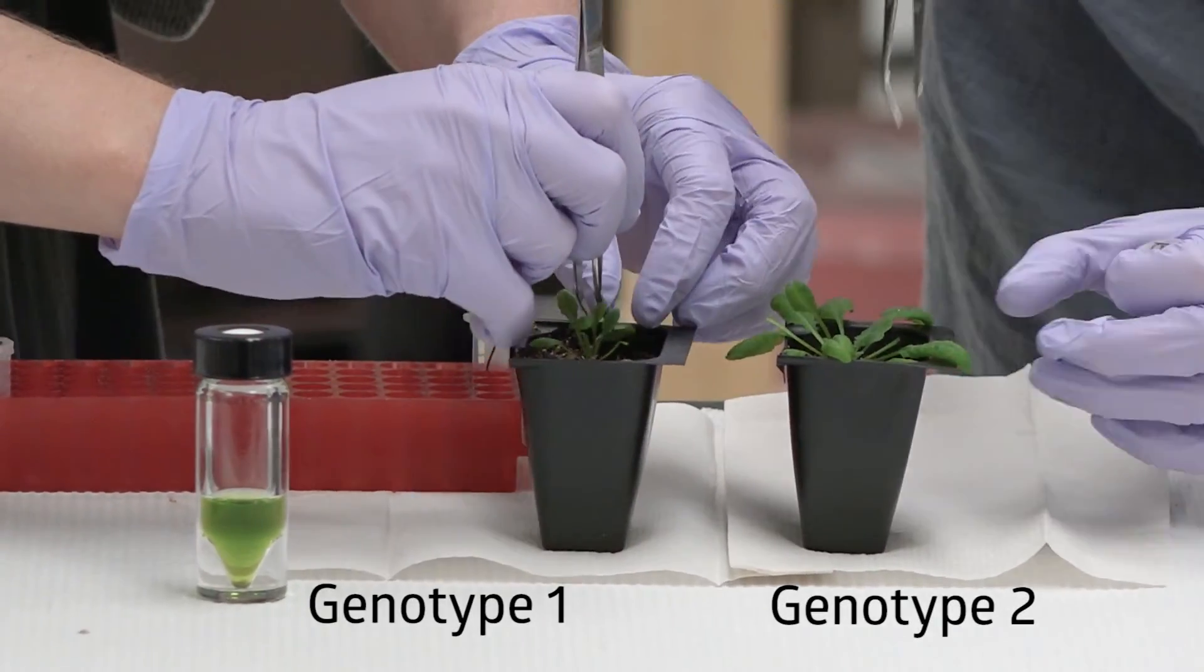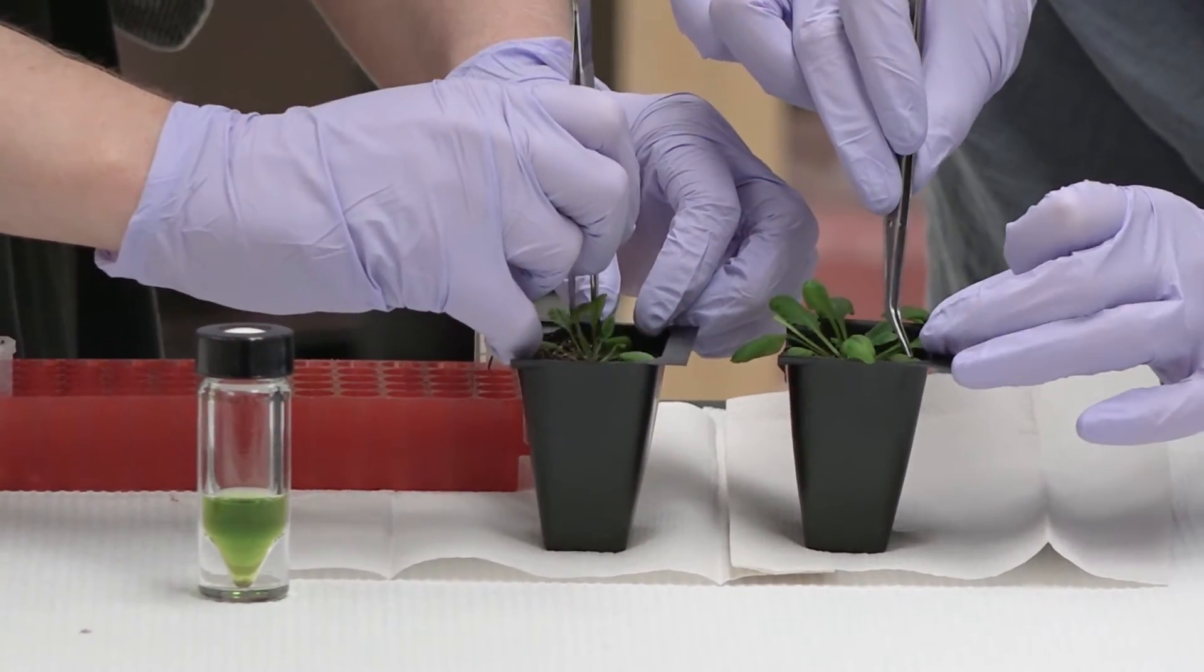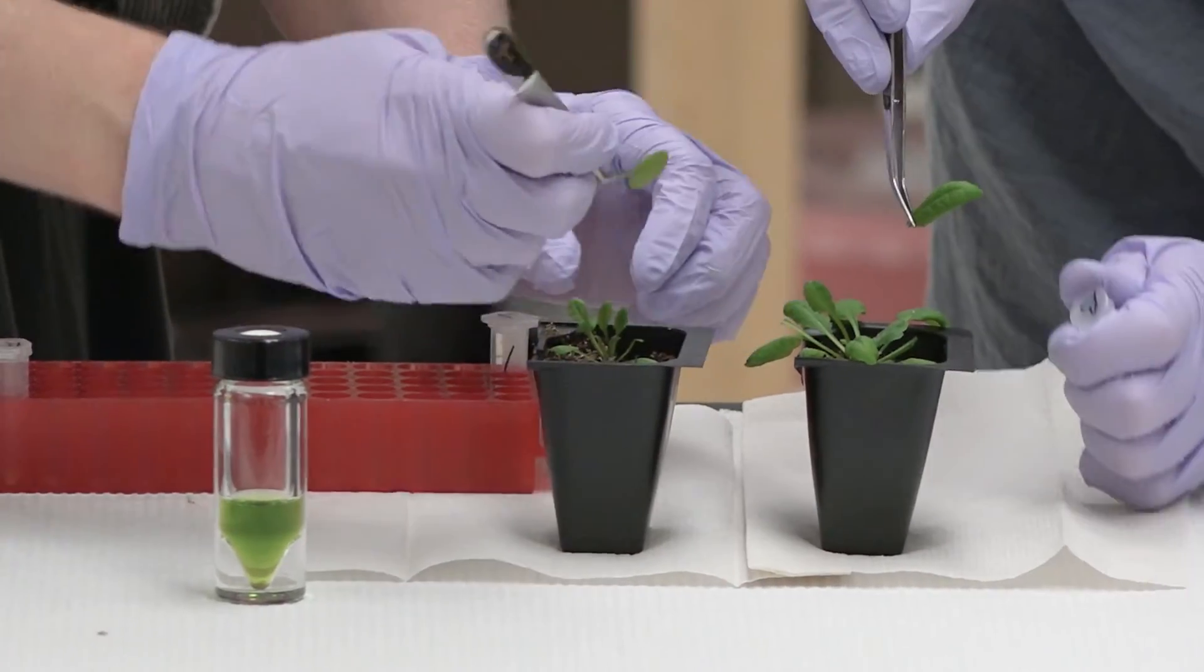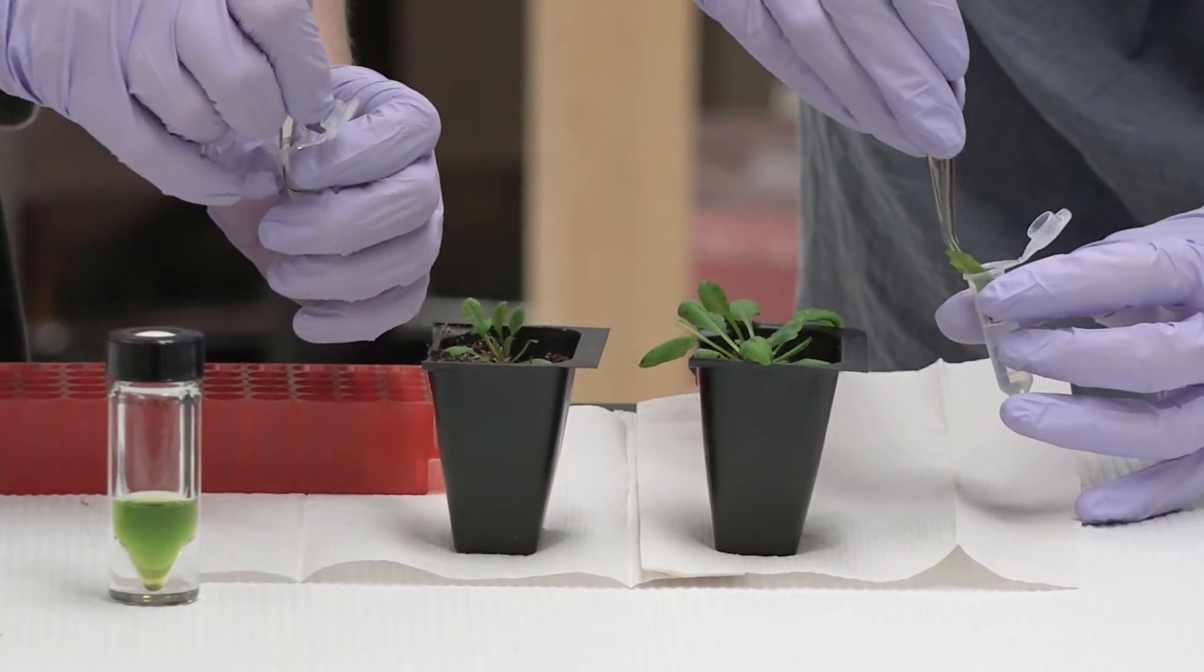What we're going to do is grab a leaf, a nice big juicy leaf off of these plants, and we're going to put them into these pre-weighed tubes that contain methanol.